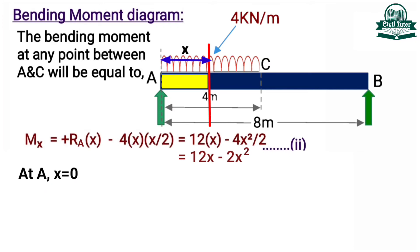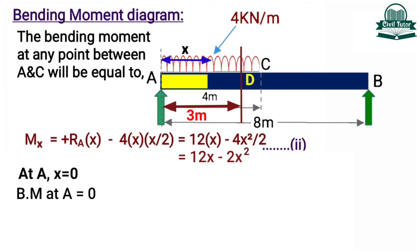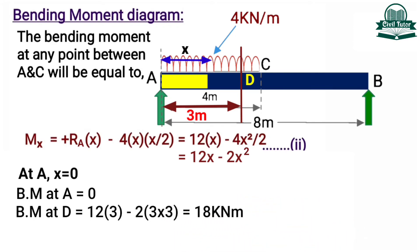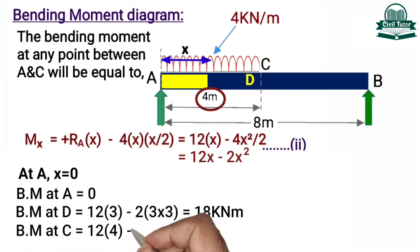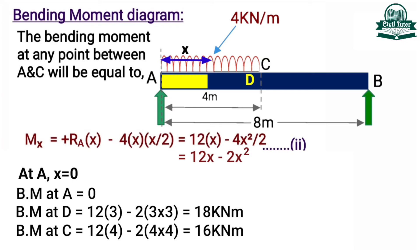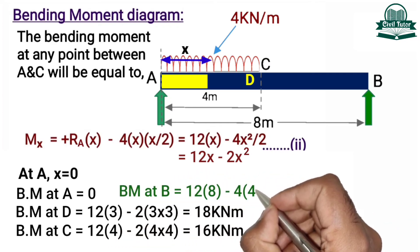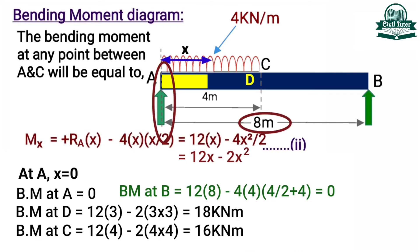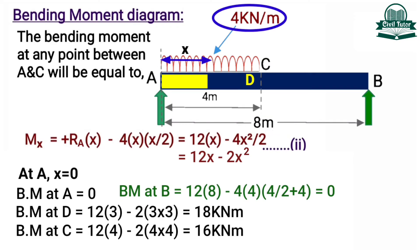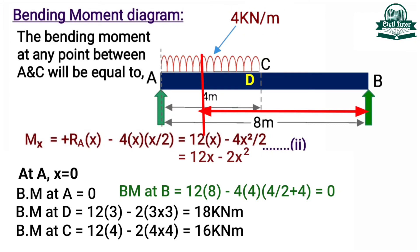At point A, x equals 0, so bending moment at A equals 0. At point D, x equals 3, so bending moment at D equals 12 times 3 minus 2 times 9, equal to 18 kN·m. At point C, x equals 4, so bending moment at C equals 12 times 4 minus 2 times 16, equal to 16 kN·m. Bending moment at point B equals RA into 8 meter minus 4 into 4 meter into the distance of the centroid of UDL from point B, which is 4 by 2 plus 4. So bending moment at B equals 0.